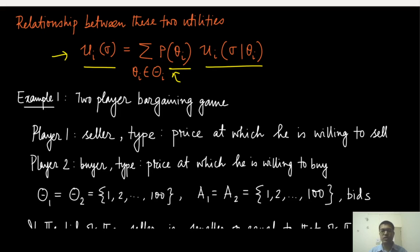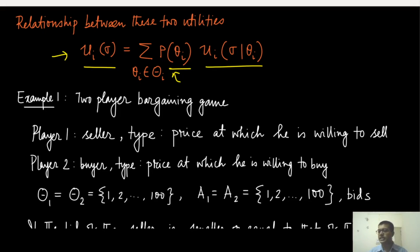Let's say there are two players. Player 1 is a seller and has a type which is its private information — the price at which it is willing to sell. Any price lower than that, the seller will not sell the object. On the other hand, the buyer has a type which is the maximum price at which it is willing to buy. Anything more than that, the buyer will not buy it.